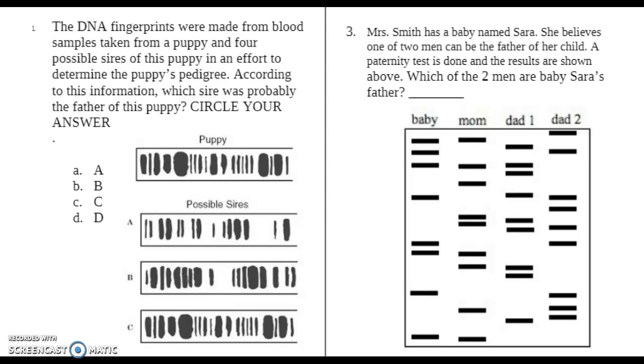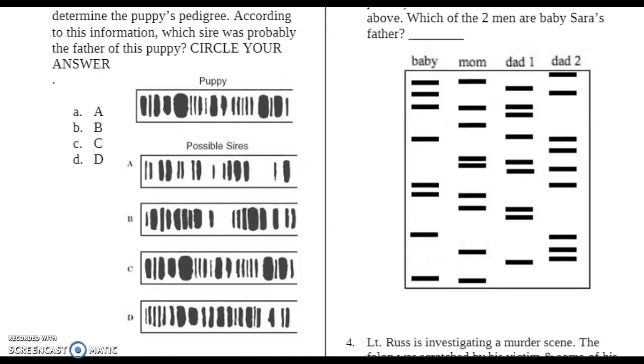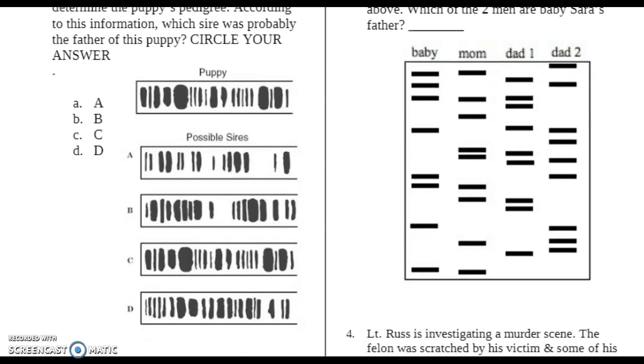According to this information, which sire was probably the father of this puppy? The possible sire is going to be the one that's more closely related. And here we see some very prominent bandings right here and here. This one's a little bit easier than some because you can just follow down until you find these bands.